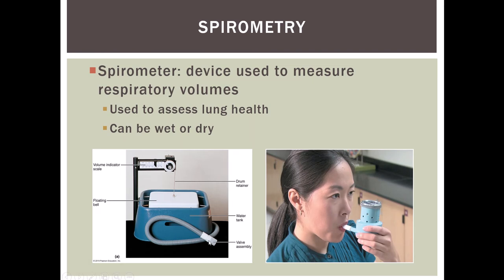With the wet spirometer, you breathe into a tube filled with water — hence 'wet spirometer' — and as you breathe in, air fills up under a bell and moves an indicator. On the handheld dry spirometers, you exhale into the spirometer and it moves a needle so you can read the respiratory volume.